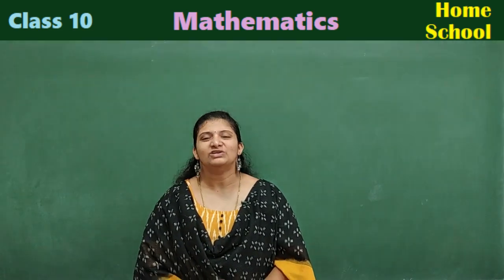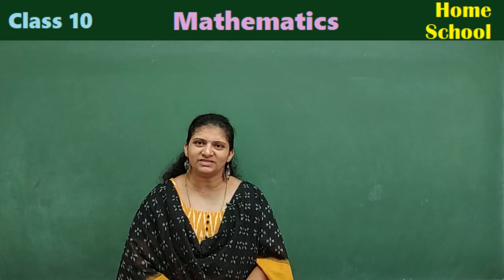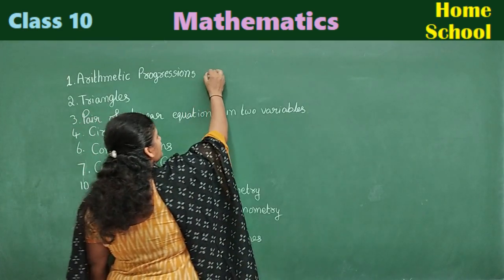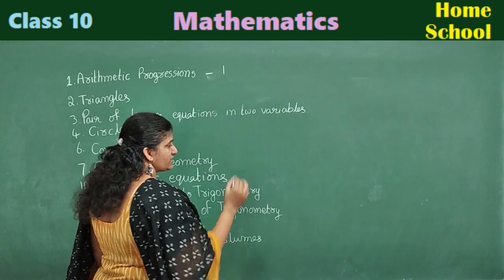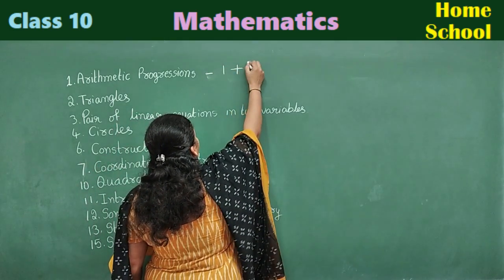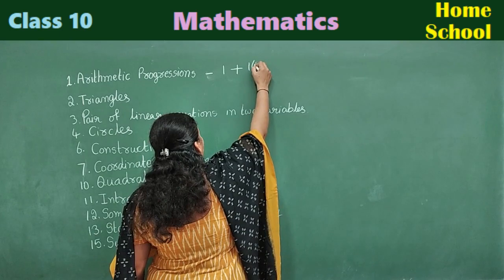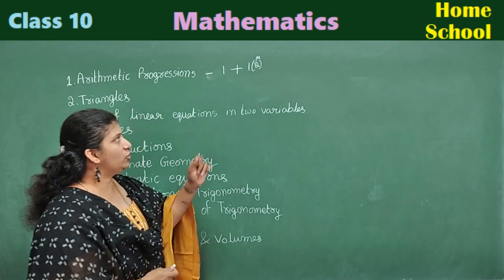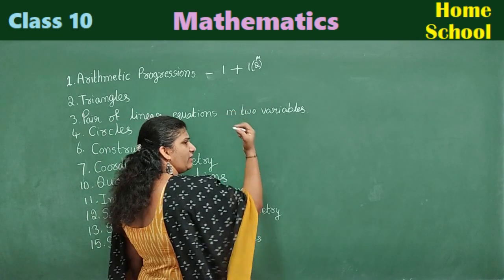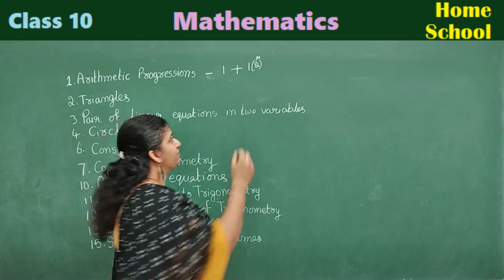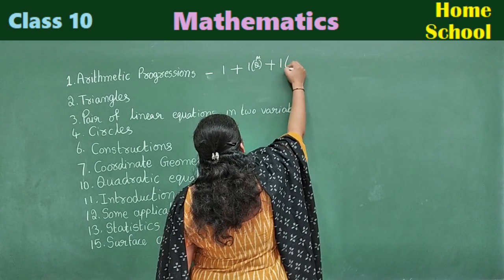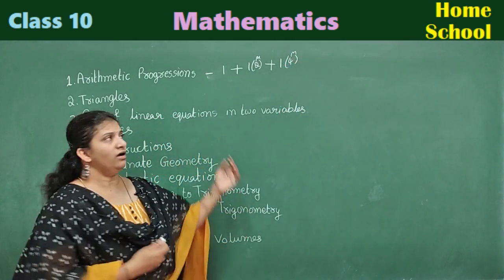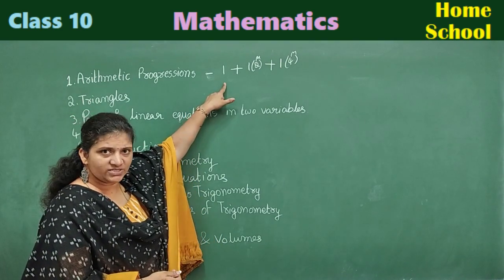Let's start with the first chapter: Arithmetic Progression. We can guess one multiple choice question, one or two two-marks questions, and one four-marks question which is compulsory.